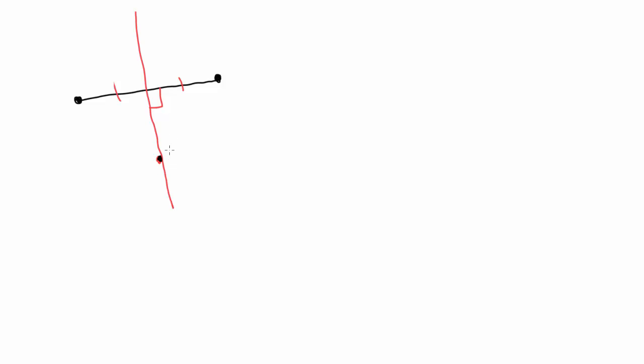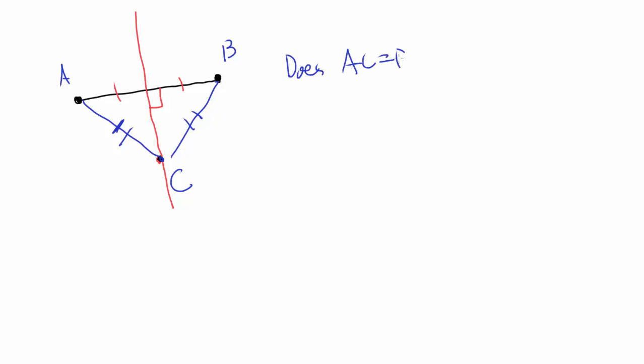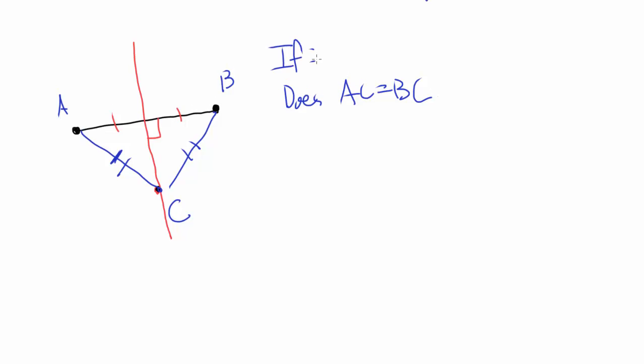Let's begin with a perpendicular bisector. Let's say you're given a point, and you know this point is on the perpendicular bisector of this segment. My question is: is this point equidistant from the endpoints of the segment? If you draw a triangle with point C, does AC equal BC? Our assumption is that C is on the perpendicular bisector of segment AB — so does AC have to equal BC? That's what we're trying to figure out.